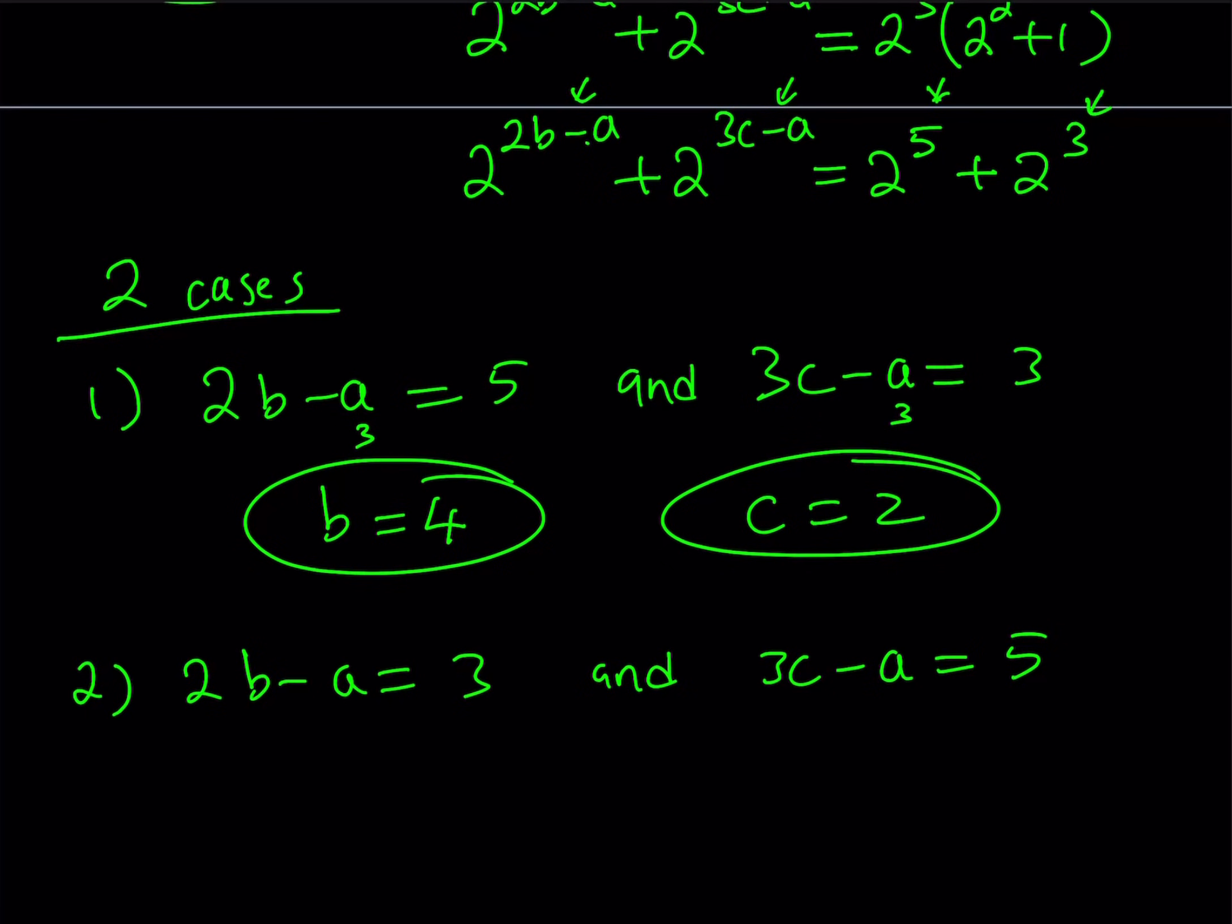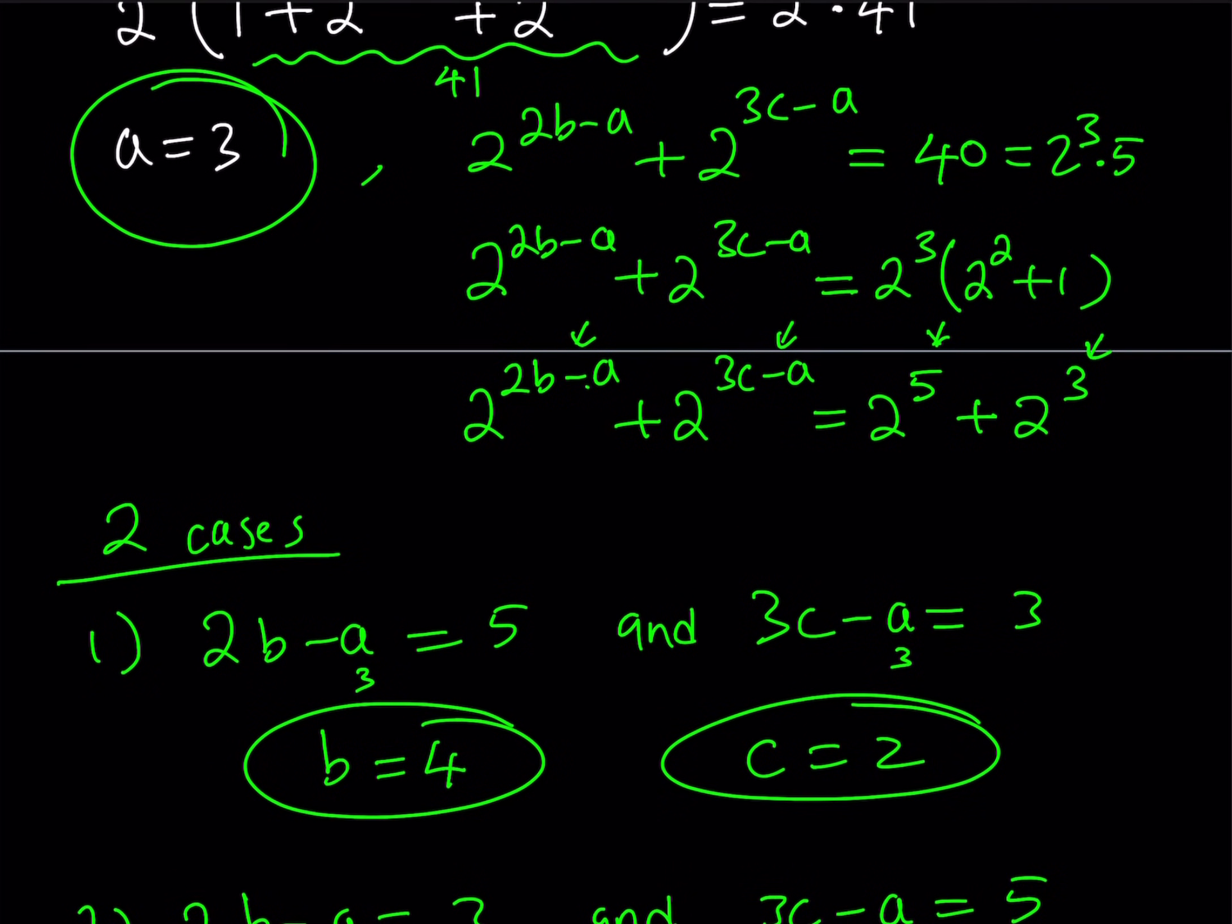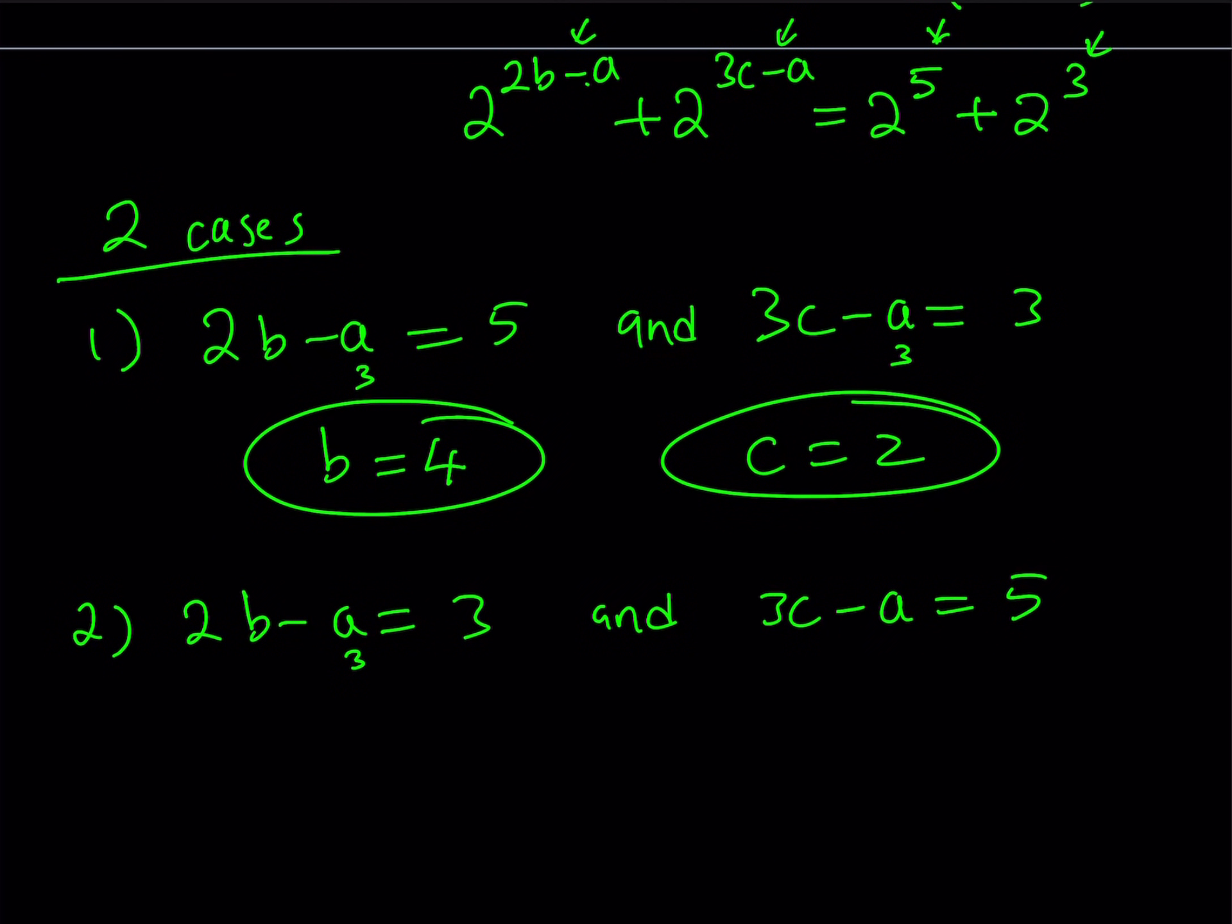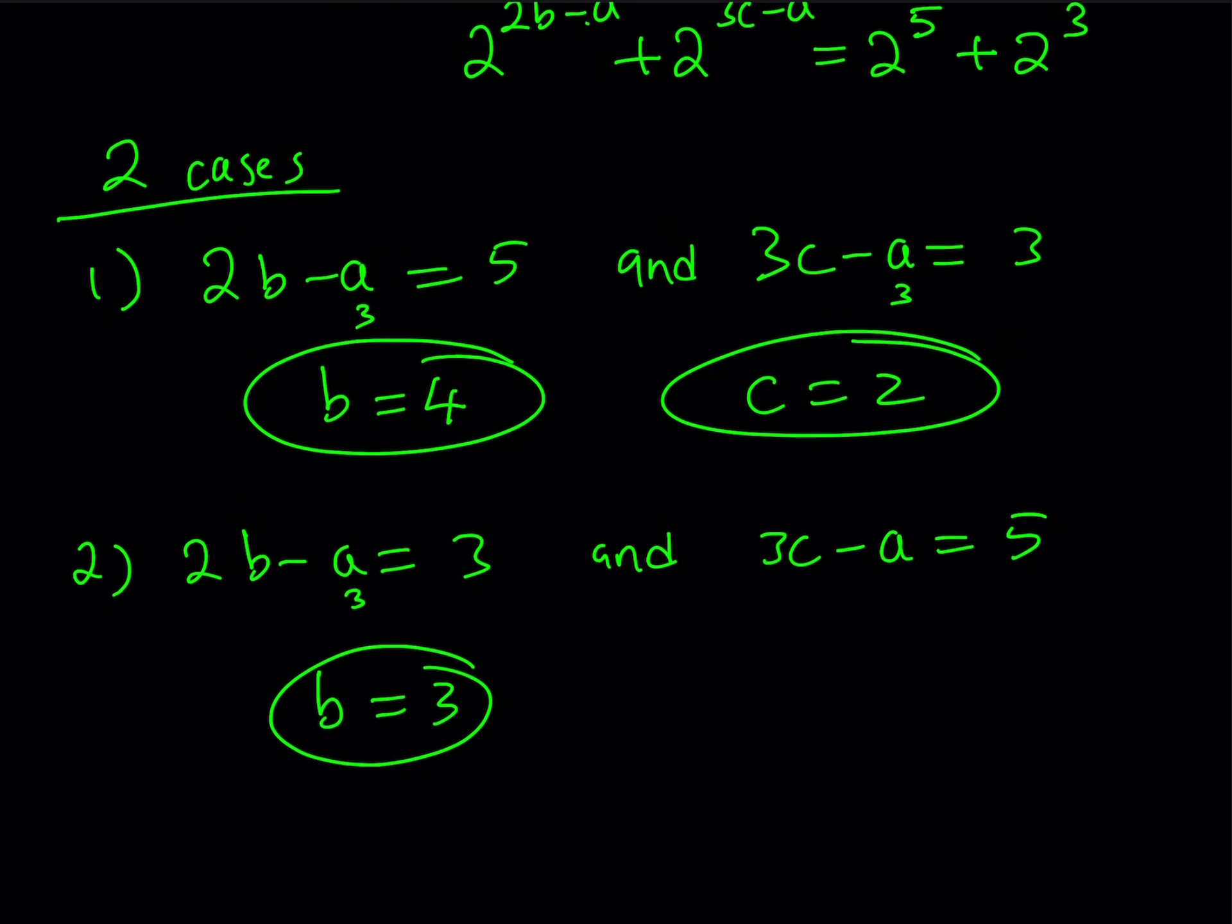But let's take a look at the second case and see what that gives us. So we're going to switch around. 2b minus a is going to be 3, and 3c minus a is going to equal 5. Is that possible? That's what we're going to check next. And if that works, then we'll get another solution.